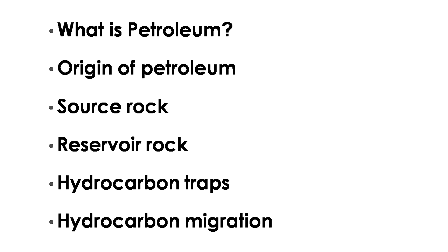In the first part, we are going to talk about what is petroleum, how petroleum is originated, and then what are the elements that are related to petroleum like the source rock, the reservoir rock, and the hydrocarbon trap. And finally, we are going to talk about hydrocarbon migration.